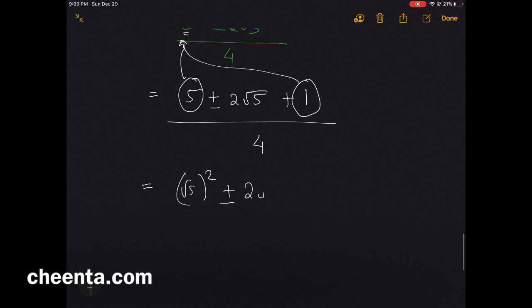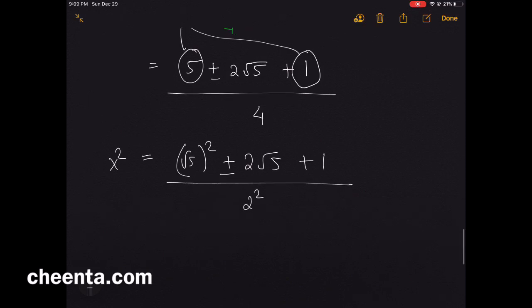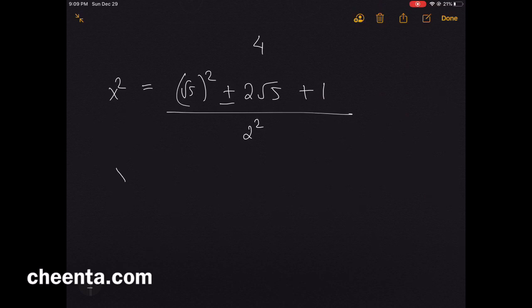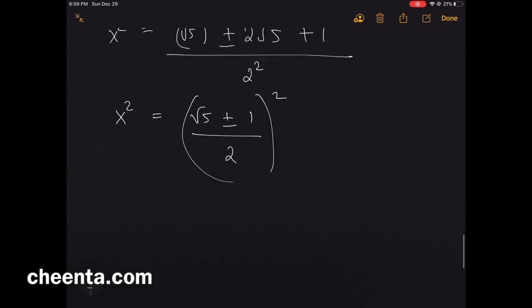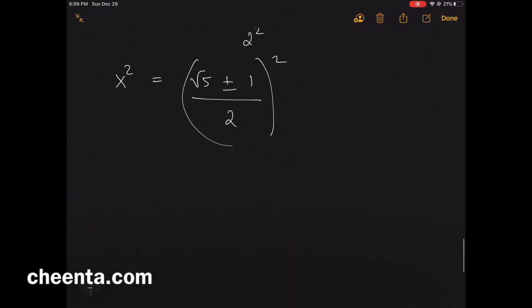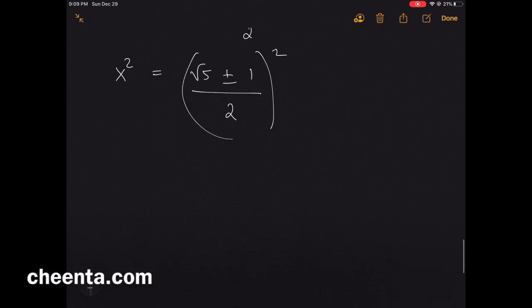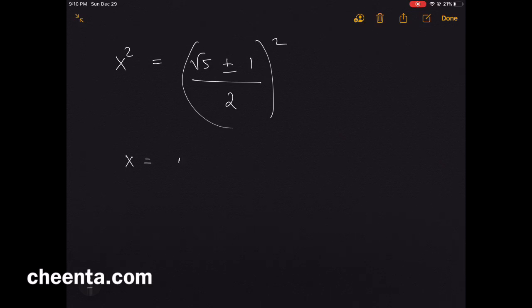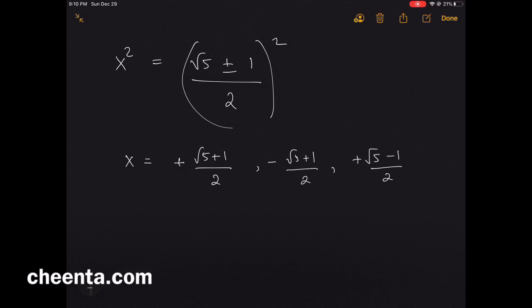So x² = ((√5 ± 1)/2)², which gives four solutions for x: (√5+1)/2, −(√5+1)/2, (√5−1)/2, and −(√5−1)/2.